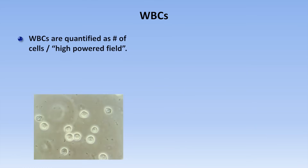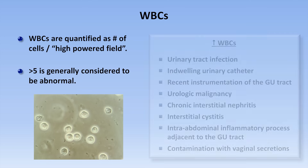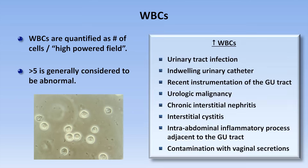White blood cells are also quantified as the number of cells per high-powered field. Greater than 5 is generally considered abnormal. There are many causes of WBCs in the urine. If you remember from the last video on urine dipsticks, there is a long list of causes of a positive leukocyte esterase. Since leukocyte esterase comes from leukocytes or white blood cells, it doesn't take a genius to predict that these lists are highly overlapping.